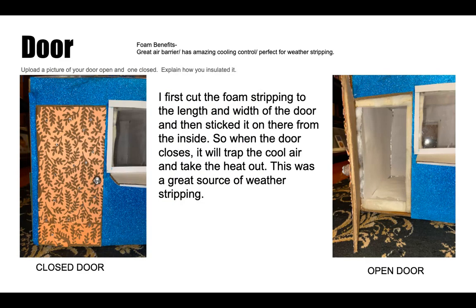For my door, the insulation that I used was foam because I know that foam is a great air barrier and it creates a great cooling control system, so it's perfect for the weather stripping that was needed. I first cut out the foam stripping into measurements of the length and width of the door. After that, I stuck it onto the inside of the house, making sure that the foam was still reaching out so when you close the door it touches it.